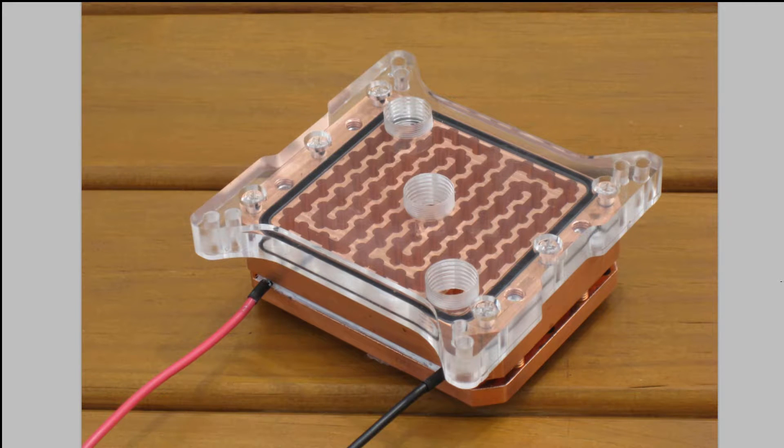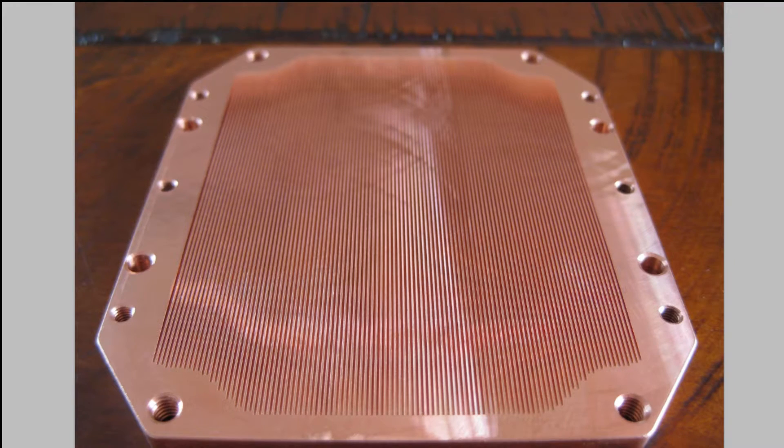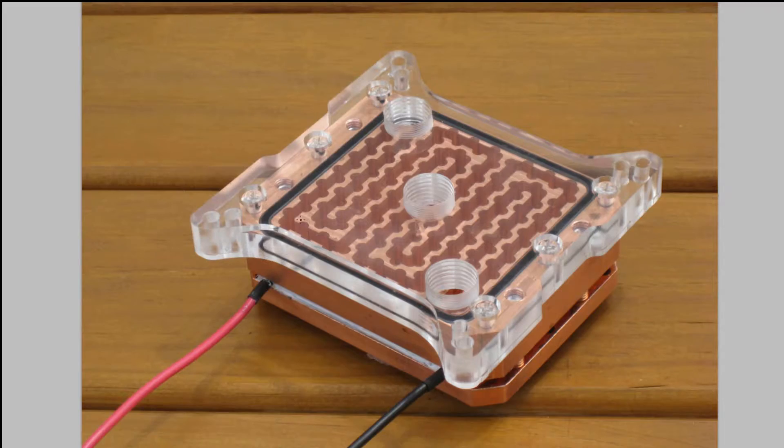So after posting those videos, I had a number of questions about the fundamental change from going from a big fat block like this one here to a very thin one like this. So this here is 4.5mm and this here is roughly 10mm. So you could say it is twice as thick.